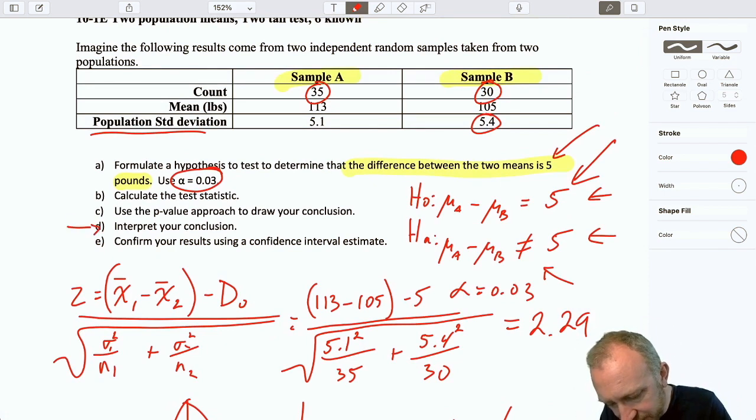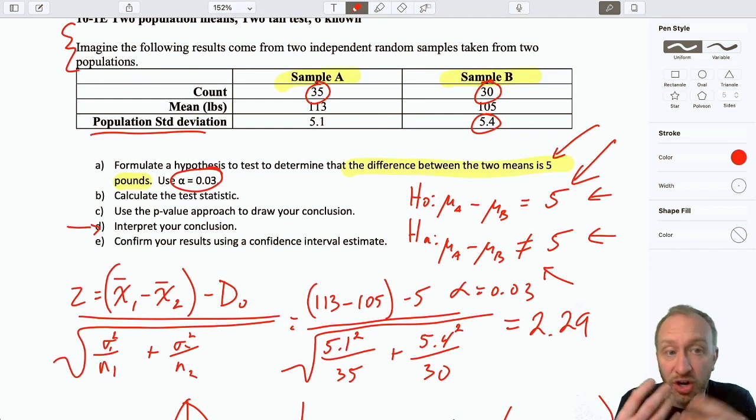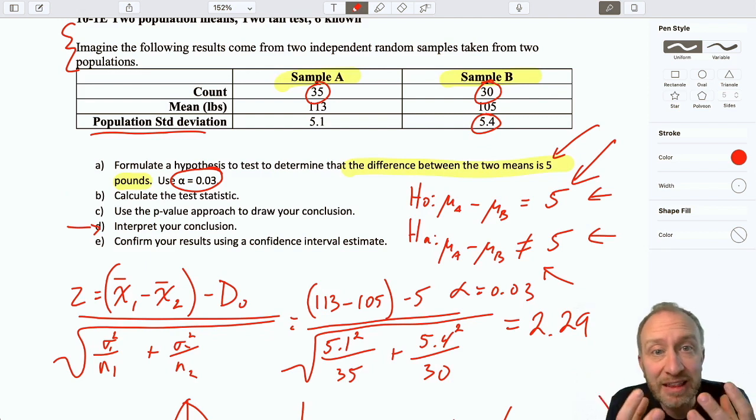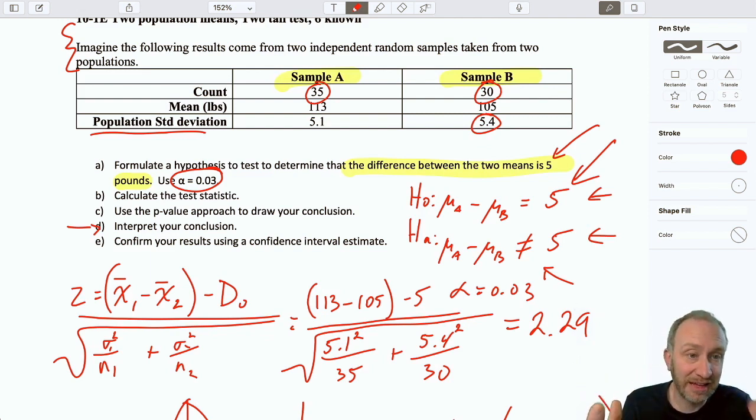To interpret that conclusion, well, we weren't really given a great deal of context. We don't really know what this sample represents. So, my ability to interpret is going to be pretty minimal. And here I'll simply be able to say that, well, we have evidence that supports the alternative hypothesis, which means that the difference between these two samples is not 5. If I had more information about what these samples represented, I would incorporate that into my interpretation. But otherwise, here we have evidence to reject the null hypothesis. We do have evidence to show that the difference between these two averages is not 5.